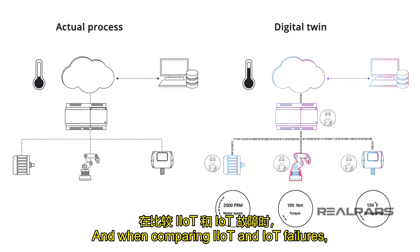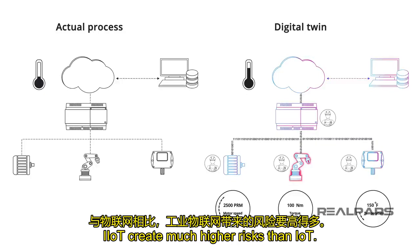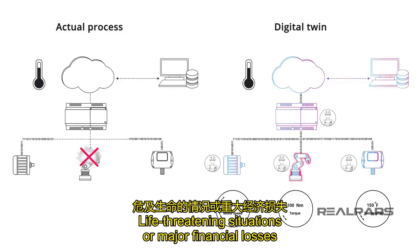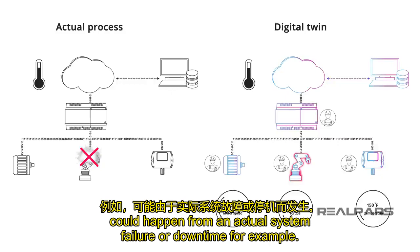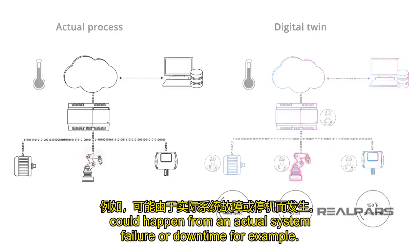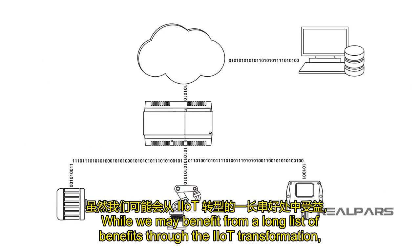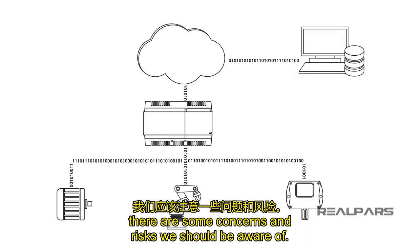When comparing IIoT and IoT failures, IIoT creates much higher risks than IoT. Life-threatening situations or major financial losses could happen from an actual system failure or downtime. While we may benefit from a long list of benefits through the IIoT transformation, there are some concerns and risks we should be aware of.